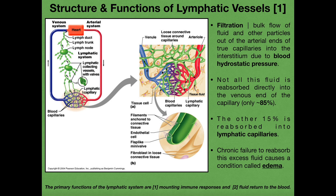On the venous end of the capillary bed, this is where reabsorption happens. The blood hydrostatic pressure on the venous end is lower than it is on the arterial end, so on this side you actually have fluid returning from the interstitium back into the capillaries and back to the venous system. But this system of filtration on the arterial end and reabsorption on the venous end is not 100% efficient — in fact, only about 85% of whatever's filtrated is reabsorbed back into the capillaries on the venous end.